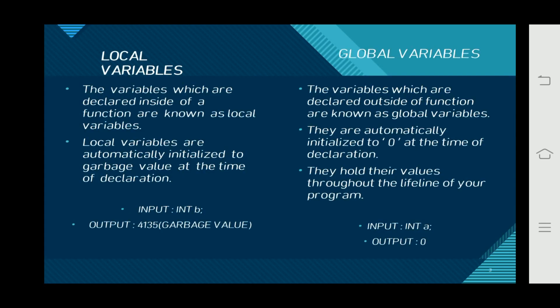Local variables are the variables which are declared inside of a function, known as local variables, meaning within the block of the program. Local variables are automatically initialized to garbage value at the time of declaration. When we are not initializing any value to that local variable, it will show the output as garbage value.